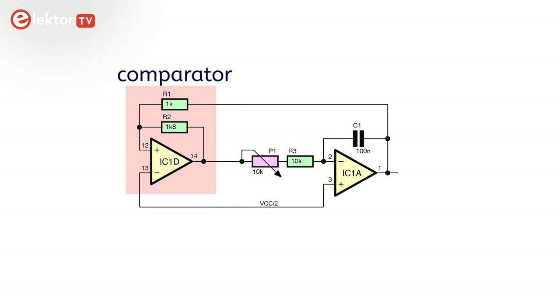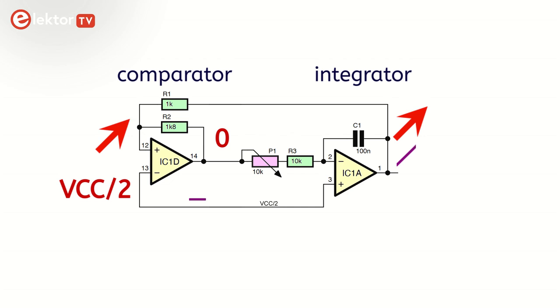IC1D together with R1 and R2 form a comparator with positive feedback. IC1A with P1, R3 and C1 act as an inverting integrator. When the output of IC1D is low, the output of IC1A will ramp up at a speed determined by P1, R3 and C1. The voltage on the non-inverting input of IC1D ramps up too, until it becomes higher than the voltage on the inverting input pin 13. Now the output of IC1D goes high and, thanks to resistor R2, it drags its non-inverting input up with it. The voltage on this input is suddenly much higher than its inverting input, so IC1D's output remains high.